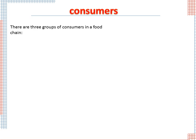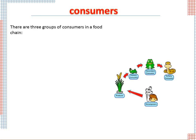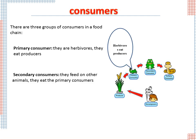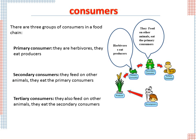There are three groups of consumers in a food chain. Primary consumers are herbivores — they eat producers. Secondary consumers feed on other animals; they eat the primary consumers. Tertiary consumers feed on secondary consumers.